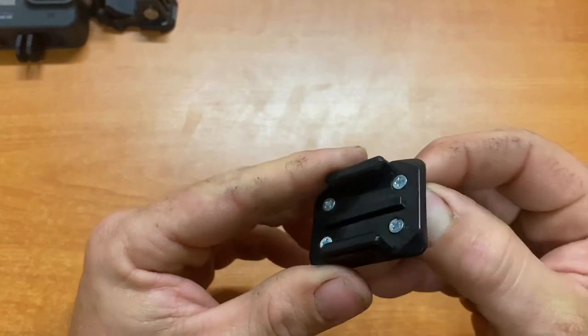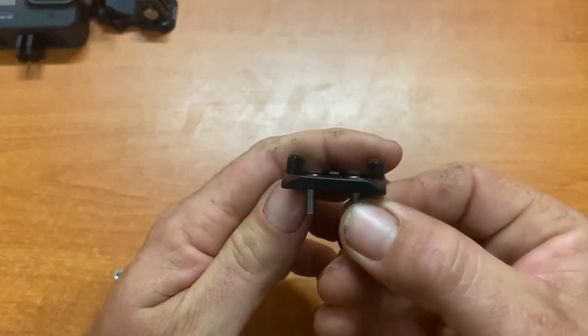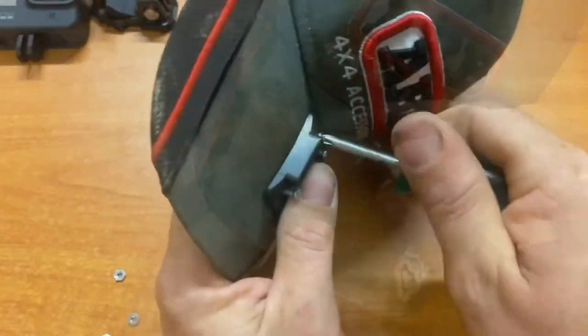Check the screw heads sit flush and once you're happy with that, go and install the mount on your hat. Nuts on the downside can tighten up.